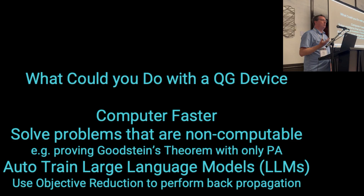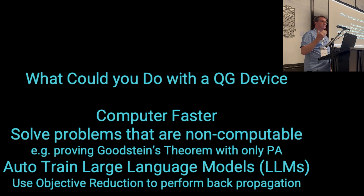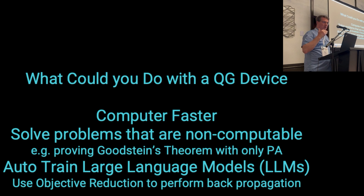Why would you want a device like this? It could compute faster. It could solve non-computable problems — for example, proving Goodstein's theorem if you only have Peano arithmetic as a starting point — or automatically train large language models, because objective reduction will automatically find and train its model.